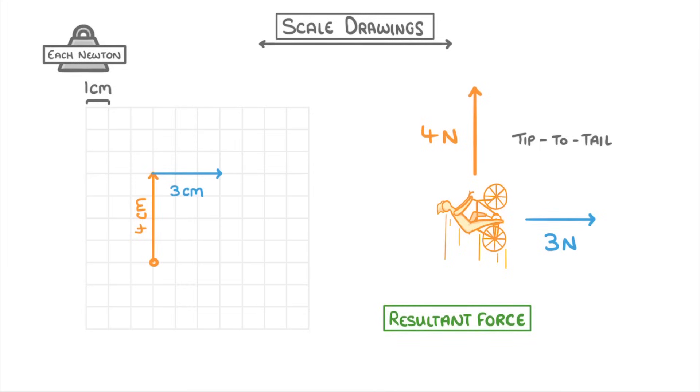Then to find the resultant force, we just draw a line from the starting point over to the end point. And because our drawing is to scale, we can just measure it with a ruler to see how long it is, in this case 5cm. And then we can convert that into newtons using our scale. So because each centimeter is 1 newton, our resultant force would be 5 newtons.